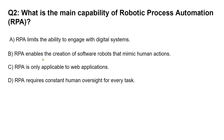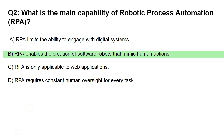You can simply comment 'Question 2' followed by your answer — for example, 'Question 2: B.' Comment your answer. The right answer is B: RPA enables the creation of software robots that mimic human actions.